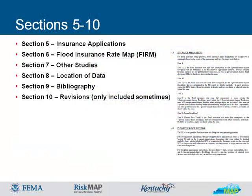For insurance applications, areas on the FIRM are designated by zones based on the flood risk potential computed in the analyses. This section identifies and defines all zones shown on the effective FIRM. Older flood insurance studies may include a flood insurance zone data table, which presents information that was used for insurance applications but is not used any longer. The FIRM section briefly describes the purpose of the FIRM for flood insurance and floodplain management. Section 7 identifies other studies of flooding in the area and indicates if these studies agree or disagree with the flood insurance study. Also included is a list of previous FISs that are superseded by the publication of the new FIS.